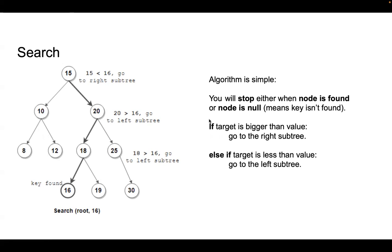The algorithm is pretty simple. If you want to find any node, you first compare the target value to the value of the current node. If the target is bigger than the node's value, you go to the right sub-tree, because the values in the right sub-tree are bigger than the node's value, and the target is bigger too, so there's no point going to the left sub-tree where values are smaller than the node's value.